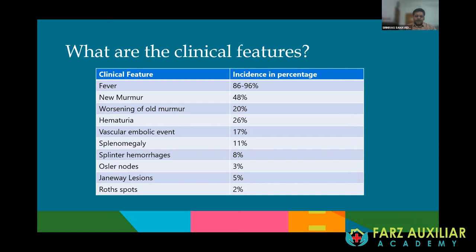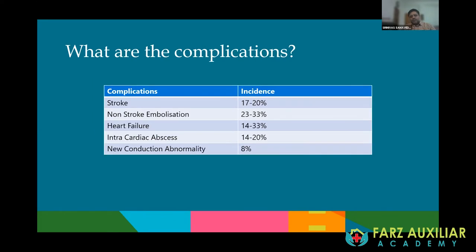Vascular embolic events are another manifestation often seen in patients with endocarditis. Splenomegaly, splinter hemorrhages, and other peripheral embolic sequelae like Osler nodes, Janeway lesions, and Roth spots are also part of the clinical features of infective endocarditis.